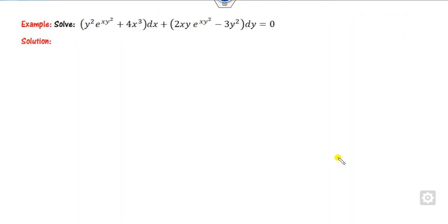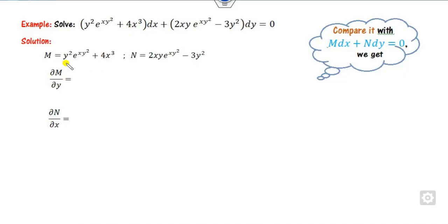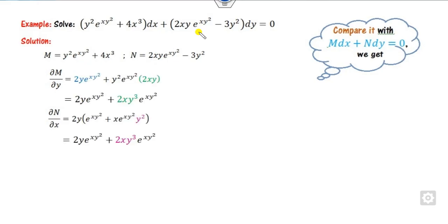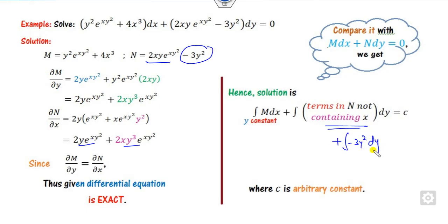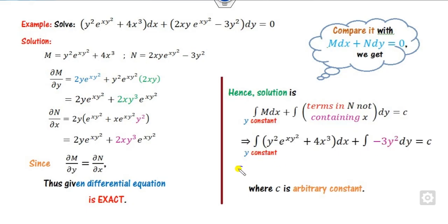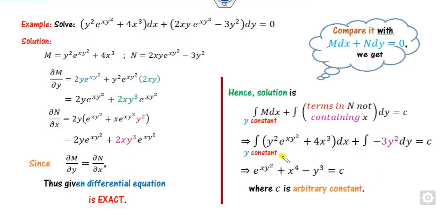Look at the next example. You compare with respect to M and N, then differentiate. For ∂M/∂y there is a u·v rule involved, giving 0. For ∂N/∂x, again a u·v rule applies. Both are the same, confirming exactness. For the solution, the term in N not containing x is identified. Integrating with y constant: y is outside and e^x integrates to e^x, divided by xy². The remaining terms cancel, giving e^x·y² + ... = c as the right answer.